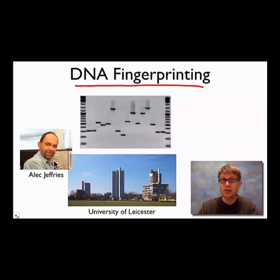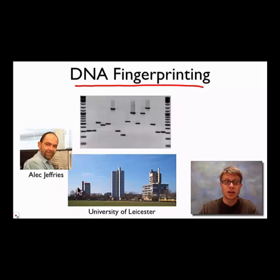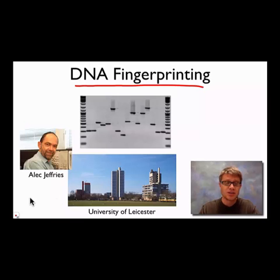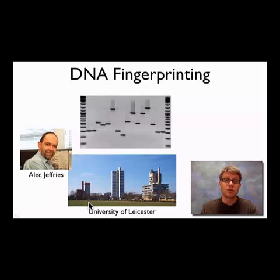It basically started with this guy, Alec Jeffreys. In his lab he was working with x-ray and looking at DNA. What he figured out is he could tell a lot about a person by looking at their DNA fingerprint — who they were related to, or who they weren't. He could tell paternity, for example. He was working at the University of Leicester and basically figured out this whole idea of DNA fingerprinting around 1984. For the next three years, all DNA fingerprinting on the planet went through this university.